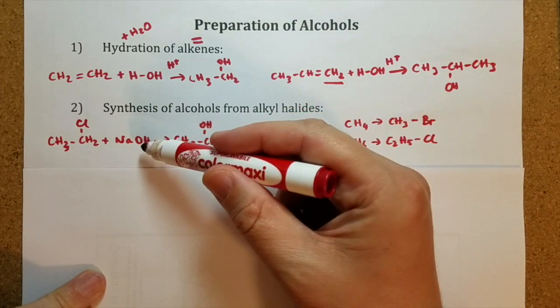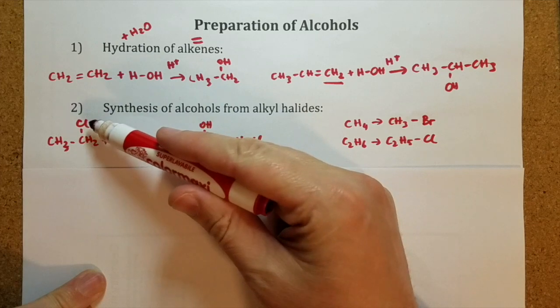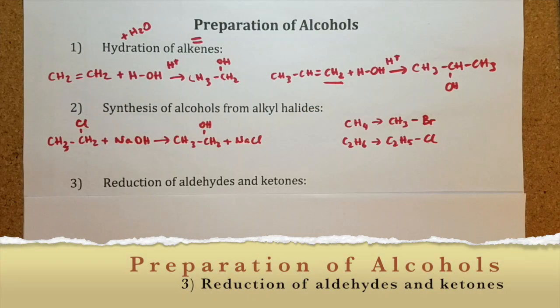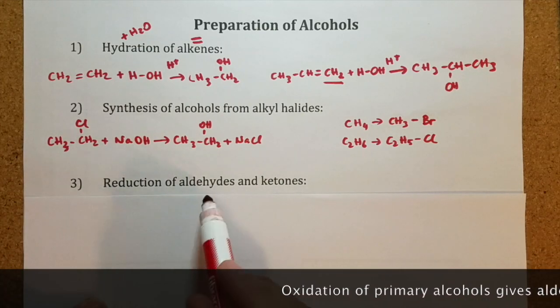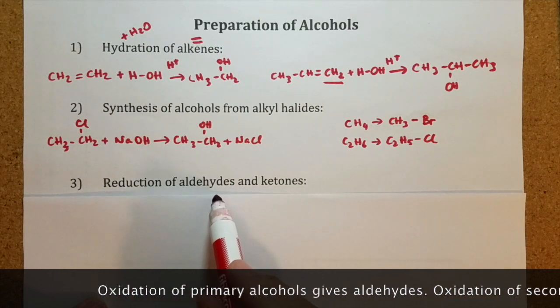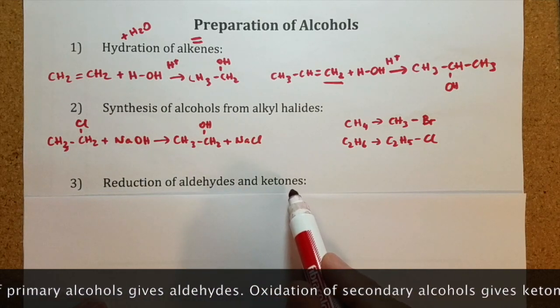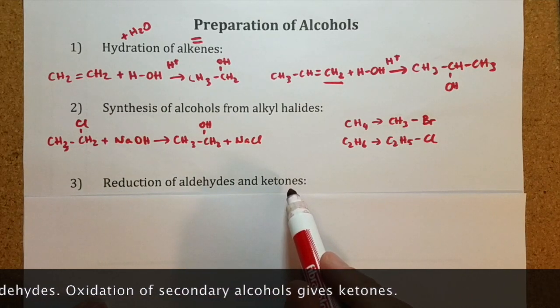And OH group substitutes the halogen. The third method is reduction of aldehydes and ketones. As you remember, oxidation of primary alcohols was giving aldehydes. And oxidation of secondary alcohols was giving ketones. This is like a reverse reaction.